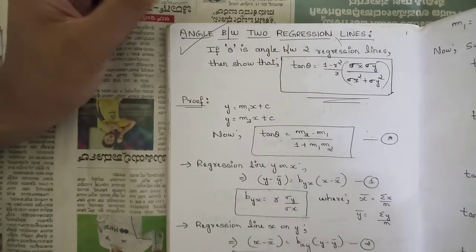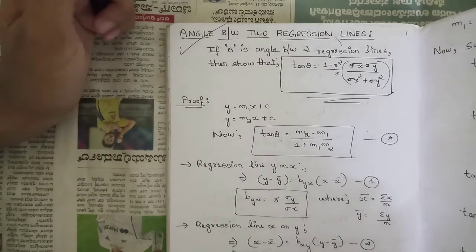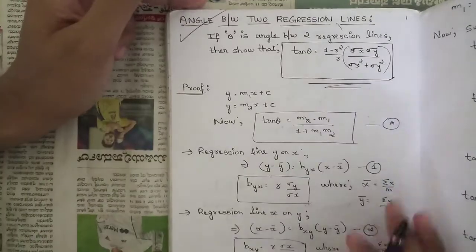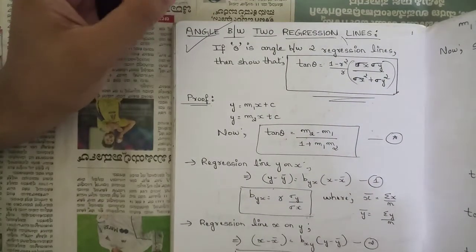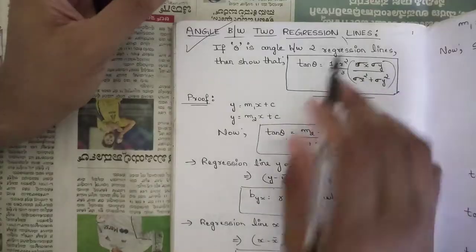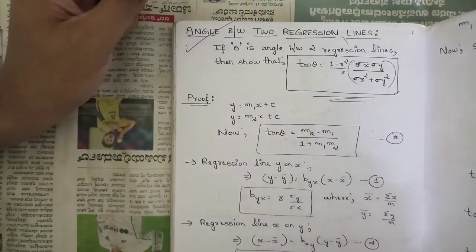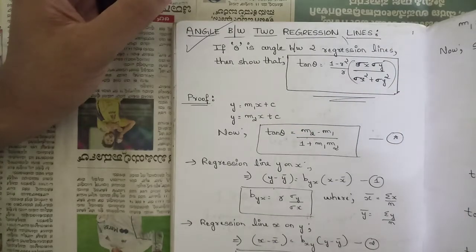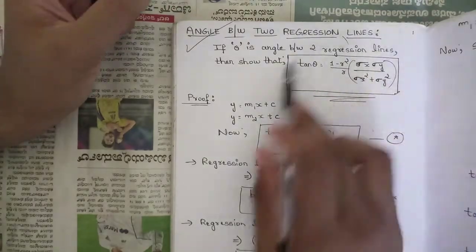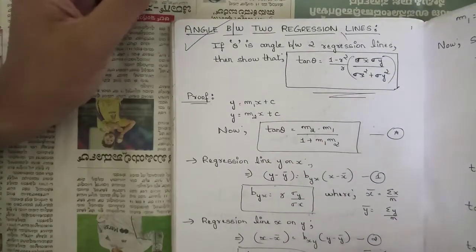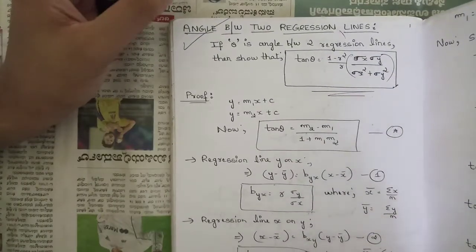This is your formula to find the angle between two regression lines, though this won't be asked in the exam. I have also written the proof here but that's not necessary for you all. Still, for your safety purpose, make a note of this formula.